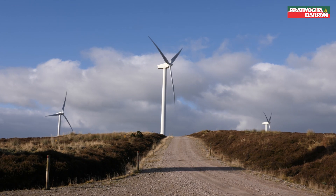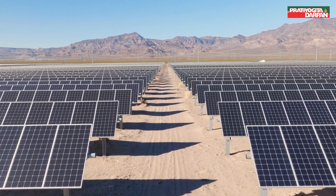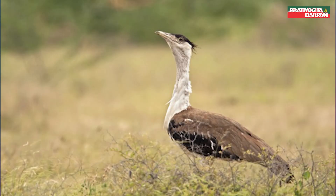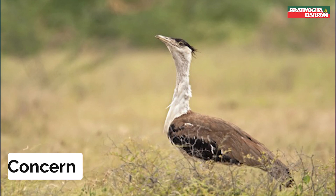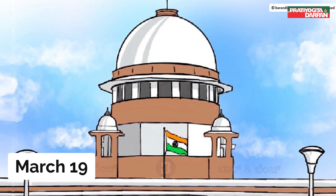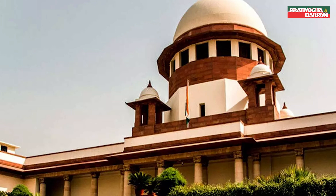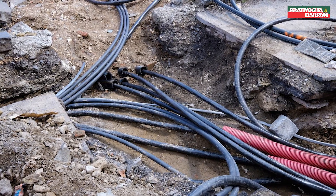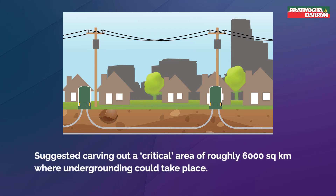The 2024 Order: On January 19, 2024, multiple solar and wind energy producing companies filed applications in the SC claiming that the April 2021 order was interfering with their ability to set up business. The central government highlighted the practical and financial difficulties of implementing the decision, noting that 80,688 km² had been identified as potential GIB habitat, with a significant area identified as priority habitat. On March 19, the case was heard again, and an additional solicitor general recommended creation of a technical committee constituted by the Ministry of Power to give recommendations on the undergrounding of power lines. The SC bench was sympathetic and suggested carving out a critical area of roughly 6,000 km² where undergrounding could take place.